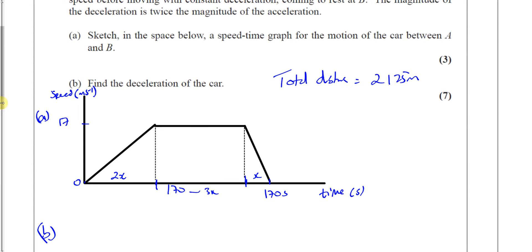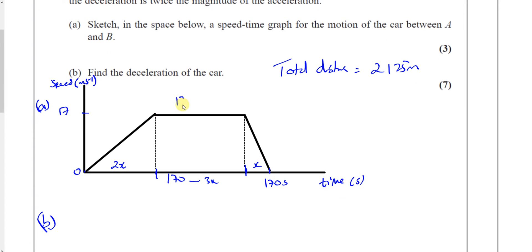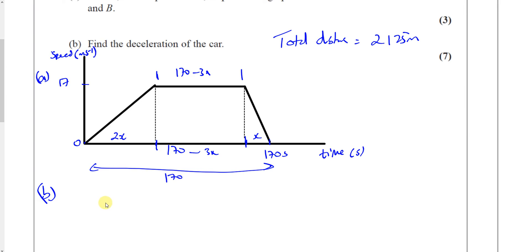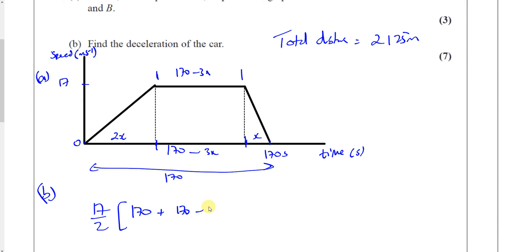The area of the whole trapezium equals 2,125. The formula is the distance between the parallel sides divided by 2, times the sum of the parallel sides. The height between the parallel sides is 17, and the sum of the parallel sides is 170 plus (170 minus 3x). This equals 2,125.